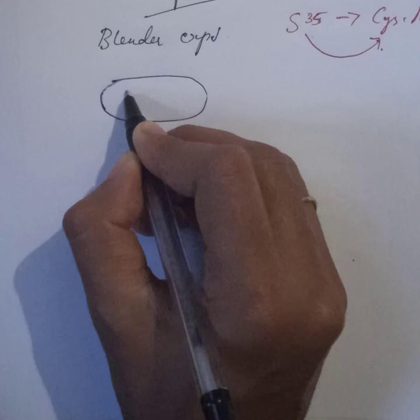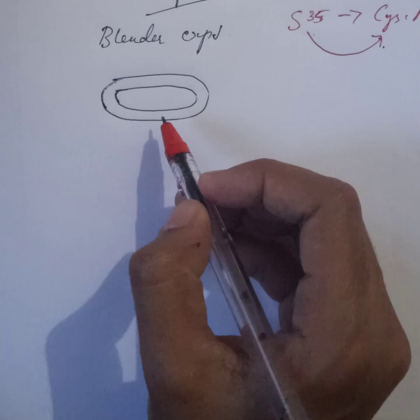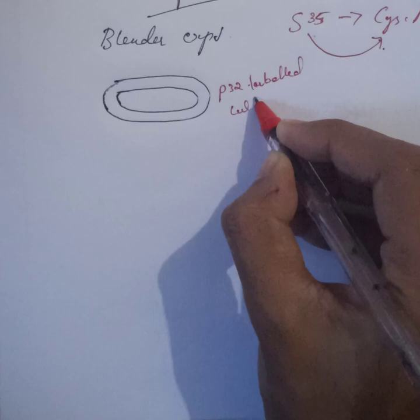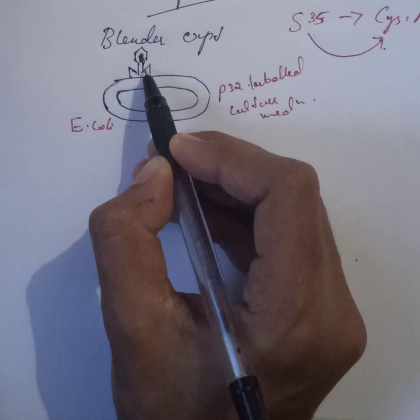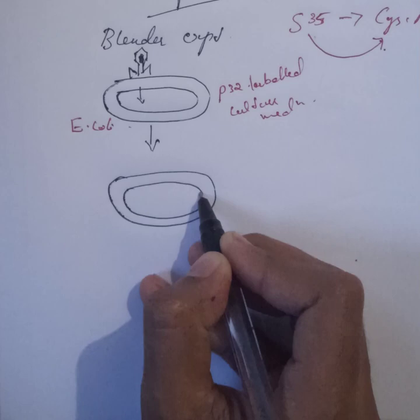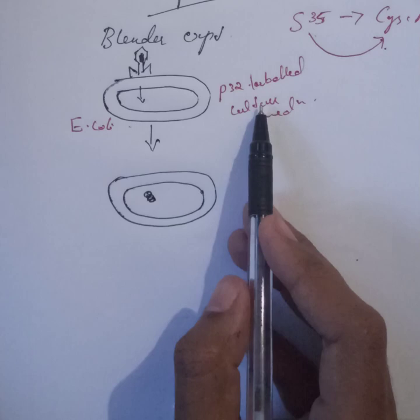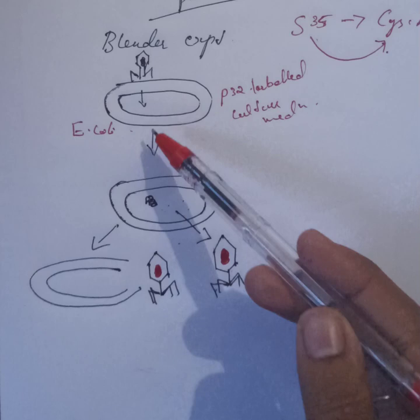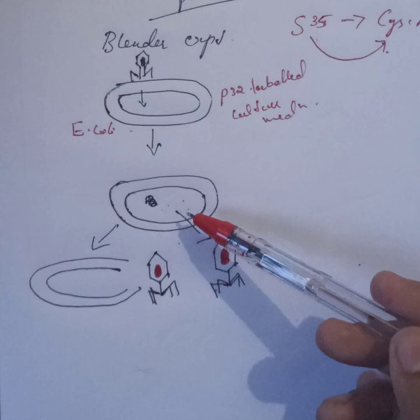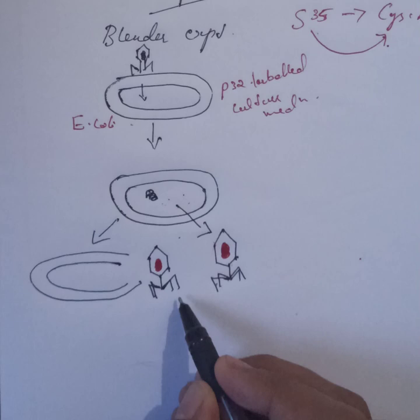The E. coli host cell is grown in P32-containing medium. Here the unlabeled T2 phage infects the E. coli host cells which are grown in P32-containing medium. After this infection, insertion of DNA of T2 phage into the host cell occurs and the T2 phage reproduces. After reproduction the host cell lyses and T2 progenies come out, releasing DNA-labeled progeny phages — because P32 labels all the DNA in phage progenies since it has phosphate groups.